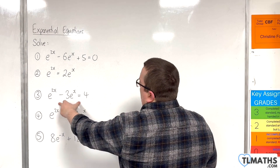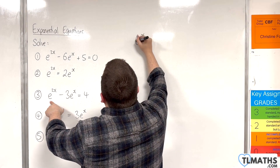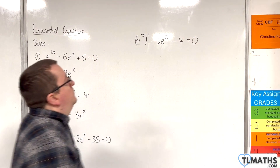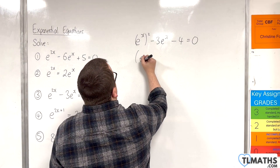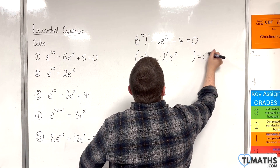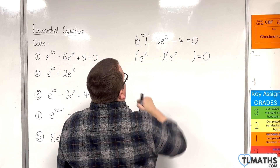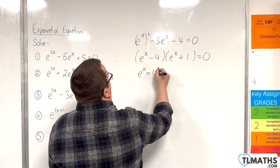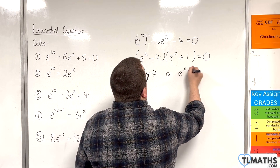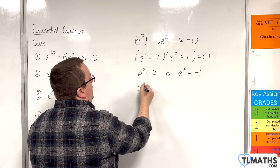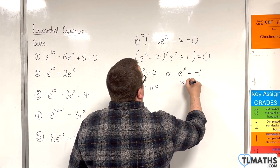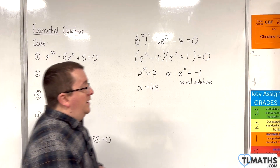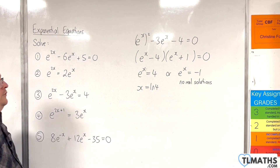For number 3, we need to rearrange. Writing e to the 2x as e to the x all squared, take away 3e to the x, and subtracting 4 from both sides gives everything on one side. Two numbers that multiply to make minus 4 but add to make minus 3 are minus 4 and plus 1. So e to the x equals 4, giving x equals the natural log of 4, or e to the x equals negative 1, which has no real solutions since e to the x cannot reach the x-axis. So there is only one solution: the natural log of 4.